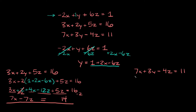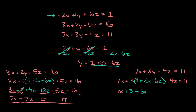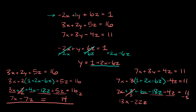Now we plug y into the other equation: 7x plus 3 times y — which is 1 plus 2x minus 6z — minus 4z is equal to 11. Distributing the 3 gives us 7x plus 3 plus 6x minus 18z minus 4z equals 11. Combining like terms: 7x plus 6x is 13x; negative 18z minus 4z is negative 22z; and moving the constant 3 to the other side, 11 minus 3 is 8. So our second new equation is 13x minus 22z is equal to 8.